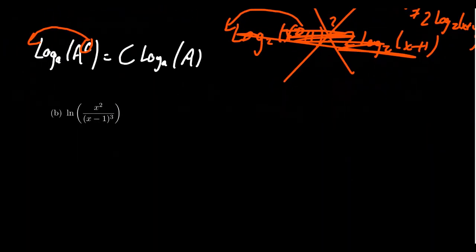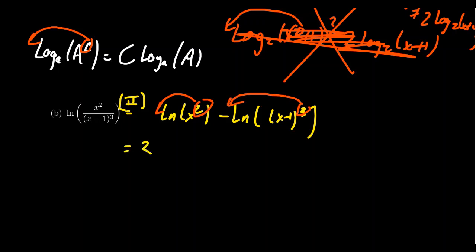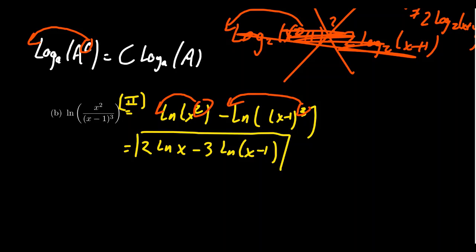Let's use the natural log in this example: ln of x² divided by (x − 1)³. Since we have division, the second law applies, giving us ln(x²) minus ln((x − 1)³). The exponent 2 applies to the entire expression x², so it comes out as a coefficient of 2, and the 3 comes out as a coefficient, giving us 2 times ln(x) minus 3 times ln(x − 1). This is the expanded form of the logarithm.